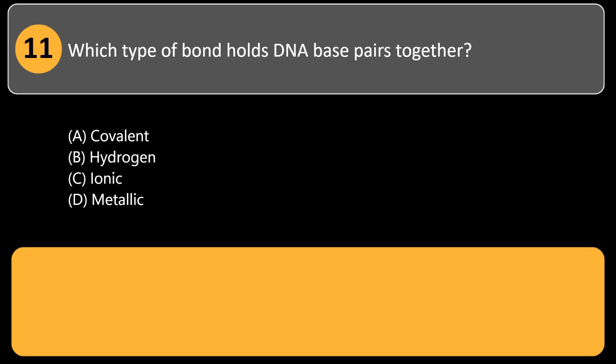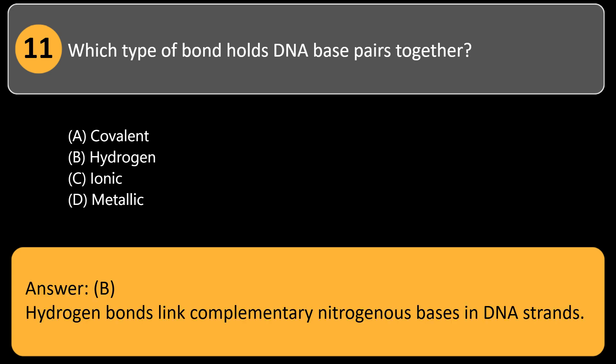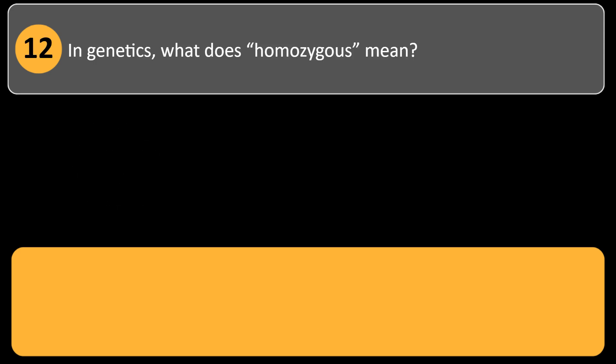Which type of bond holds DNA base pairs together? A. Covalent, B. Hydrogen, C. Ionic, D. Metallic. Answer: B. Hydrogen bonds link complementary nitrogenous bases in DNA strands.